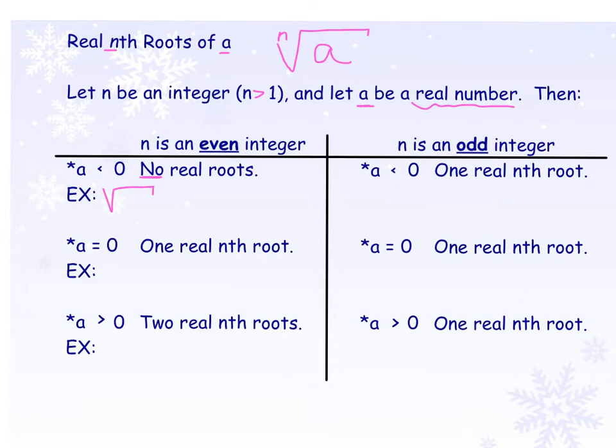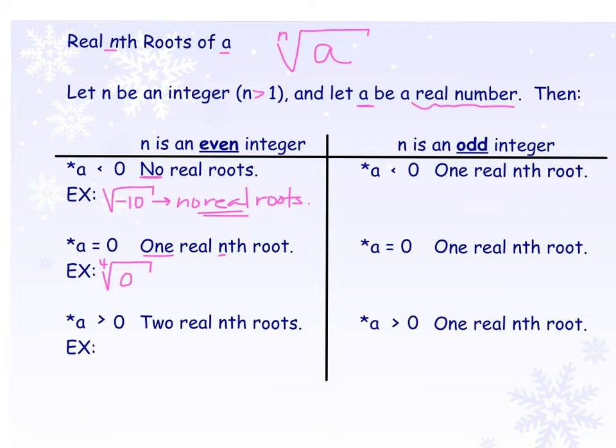For example, if you have the square root — meaning n is even — and a is negative, like the square root of negative 10, that is not possible. There are no real solutions. But if a equals 0 and you have an even nth root, there's one solution: no matter what root you take, the root of 0 is always 0. So there's always exactly one solution when a equals 0.